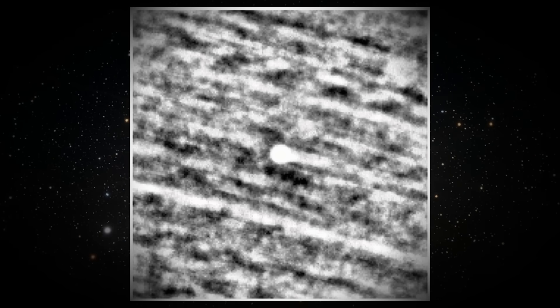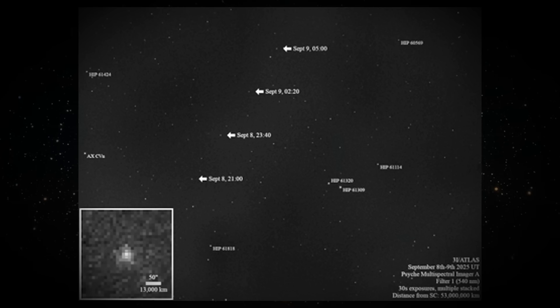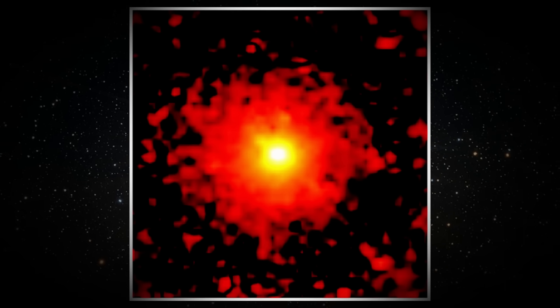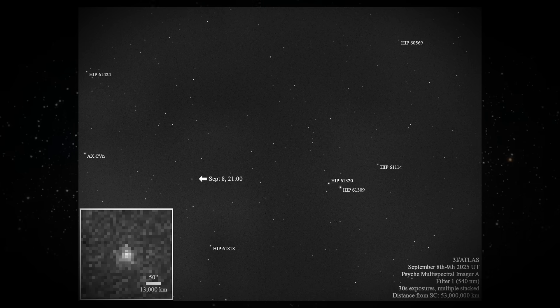Extremely lucky natural outgassing. The second possibility is that 3i Atlas is a natural comet that, when it approached the Sun, began releasing gases and particles, a process called outgassing. These jets of material could have pushed the object exactly in the right direction to hit Jupiter's hill radius.